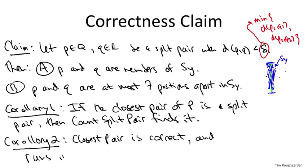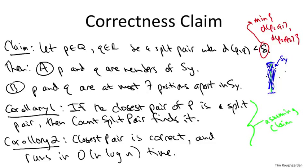Corollary two: if we can prove the claim, then we have a correct O(n log n) implementation for closest pair of points — replicating for the 2D case the guarantee we got just by sorting in the 1D case. These corollaries hold only if the claim is in fact true. I've given you no justification for it yet, and indeed even the statement of the claim is a little bit shocking. In the next video, I'll give you a full explanation of why this claim is true.